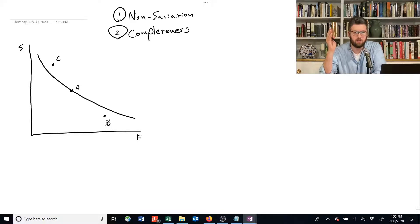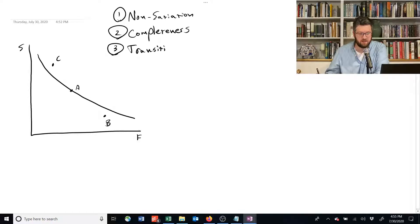Now we're going to add a third assumption about human preferences. This one is called transitivity, and it's an assumption that preferences are logically coherent.